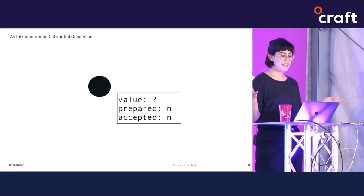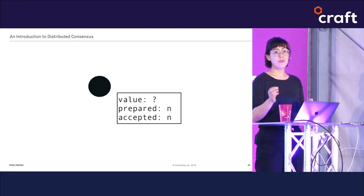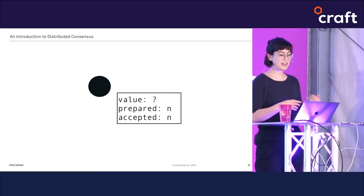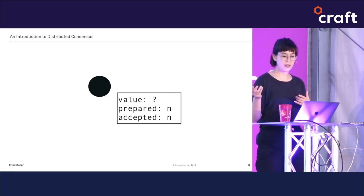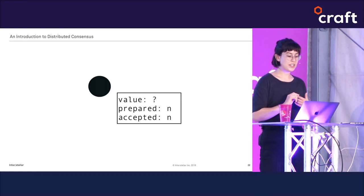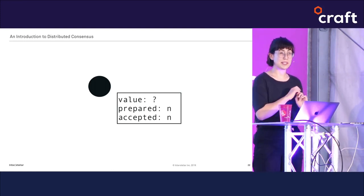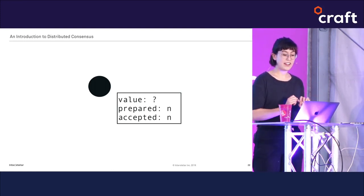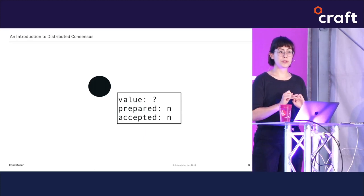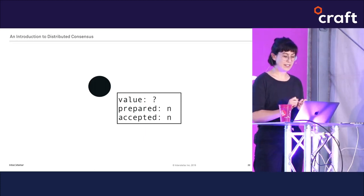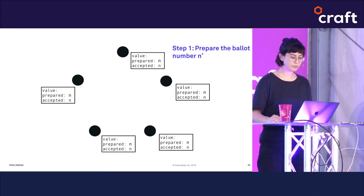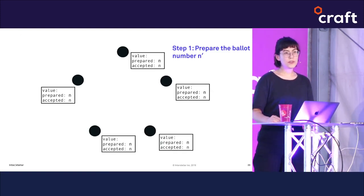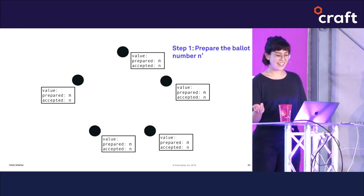Let's look more closely at a node in Paxos. Our node no longer has a single slot for a value — now it has three slots. One is for the value as before, but there are two new numbers: the number of the ballot this node has most recently prepared, and the number of the ballot this node has most recently accepted. We can call both of these values n for now.